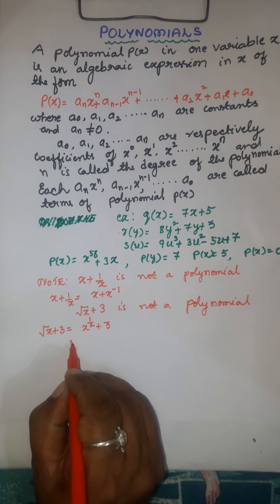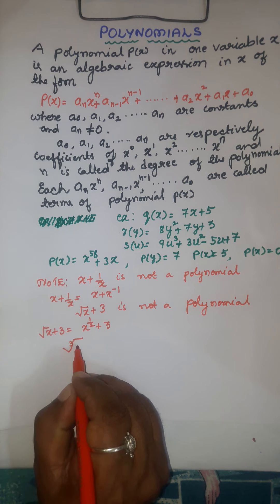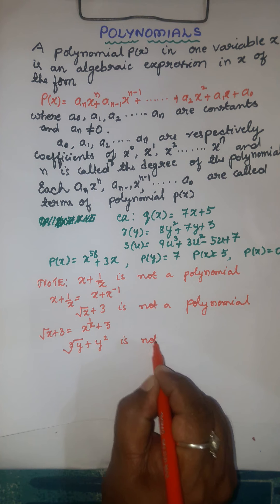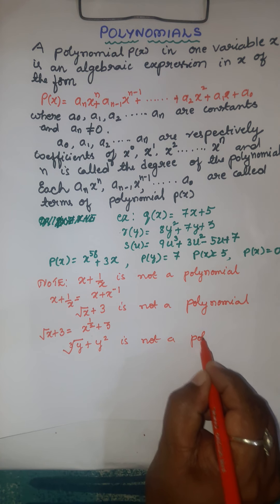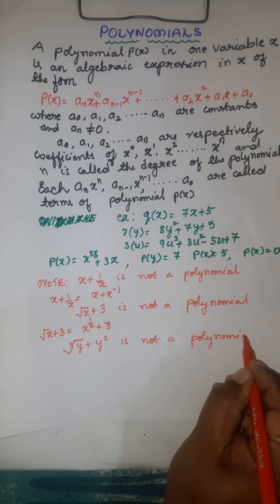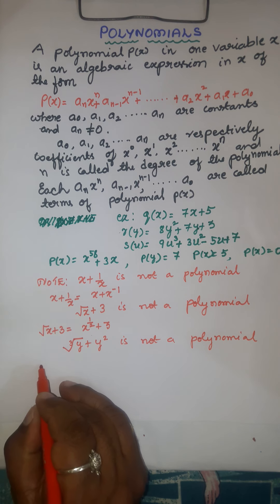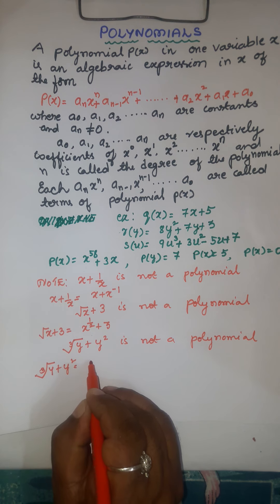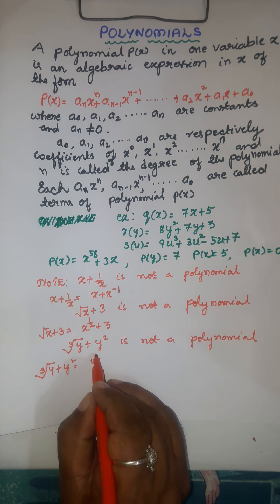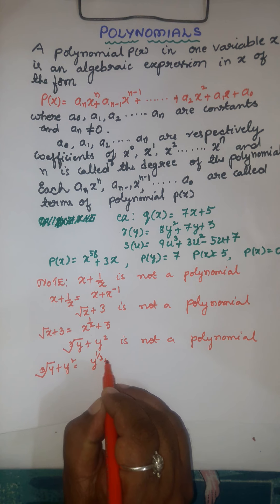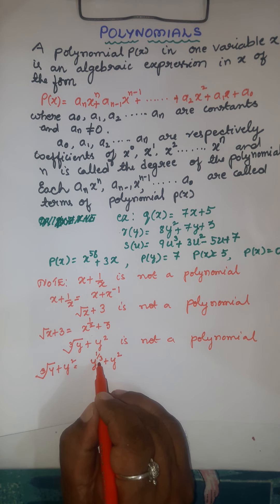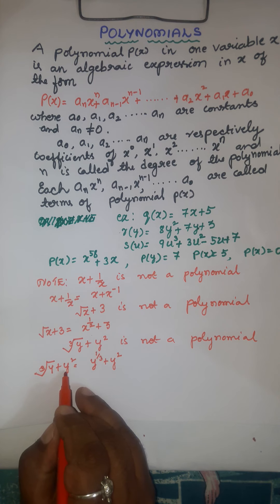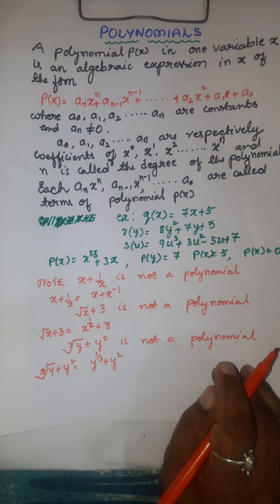Again, cube root of y plus y squared is not a polynomial, because cube root of y plus y squared equals y to the power of 1 by 3 plus y squared. Since 1 by 3 is a fraction and not a positive integer, therefore cube root of y plus y squared is not a polynomial.